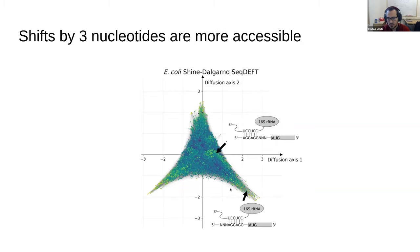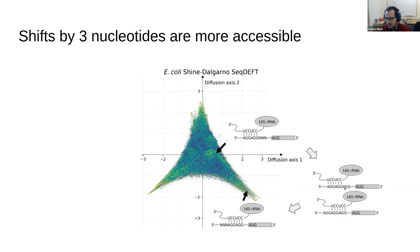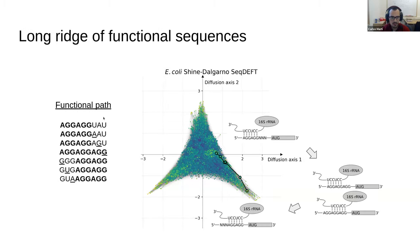In contrast, it's easier to shift this core motif by three positions, as we can see because they are represented more closely together. There is an extended reach of functional sequences that connects them. This happens because of the self-similarity of the AGG motif, which allows the three free bases to evolve another AGG, providing a sequence that can be bound simultaneously in two registers. These three bases could then mutate again, completing the functional transition — moving the core motif by three positions without losing fitness at any point.